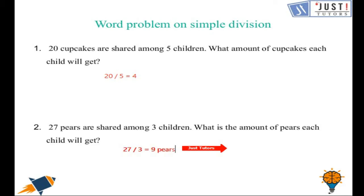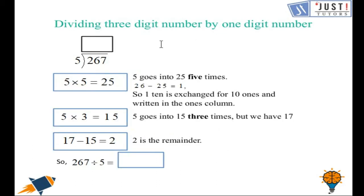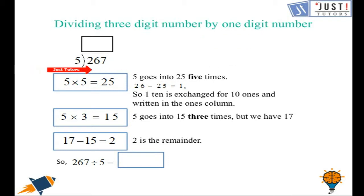Let's move forward with the discussion of dividing a three-digit number by a one-digit number. Here we have 267 divided by five. Five goes into two zero times, so two carries over to six. Five times five is twenty-five, so five goes into twenty-six five times.